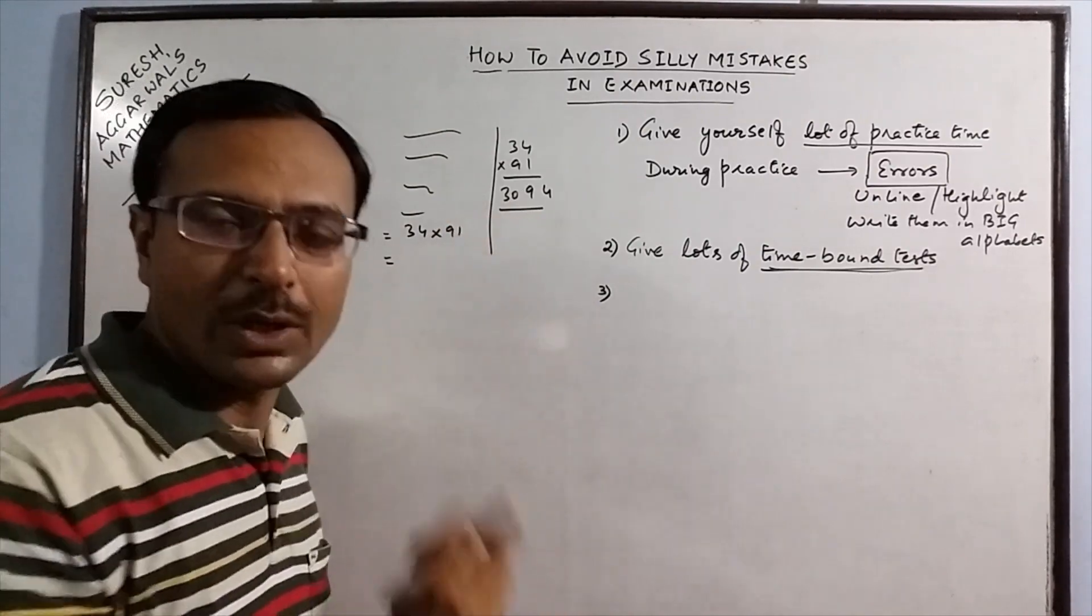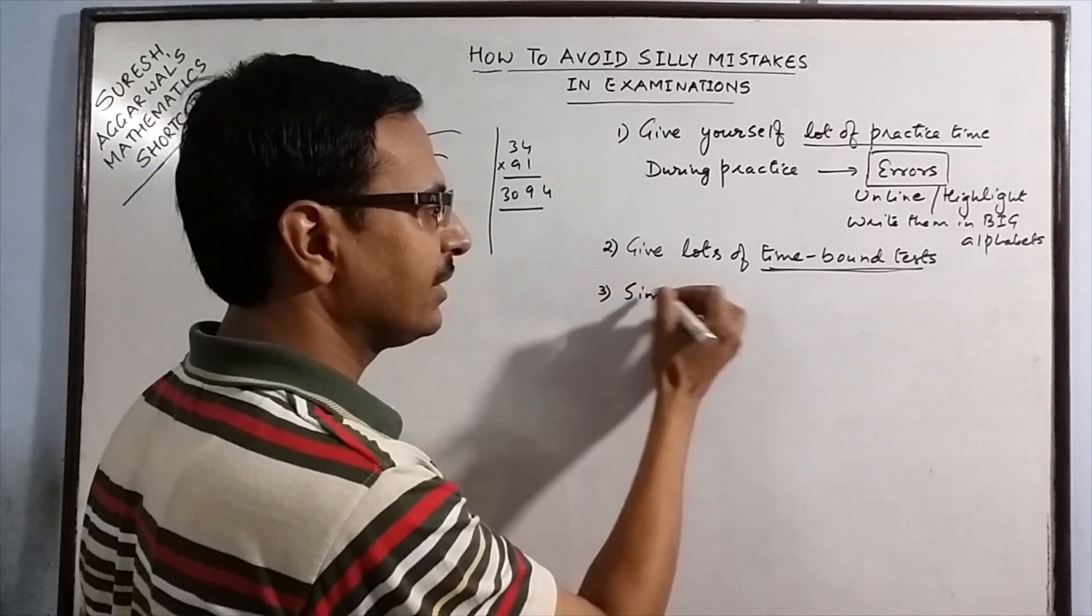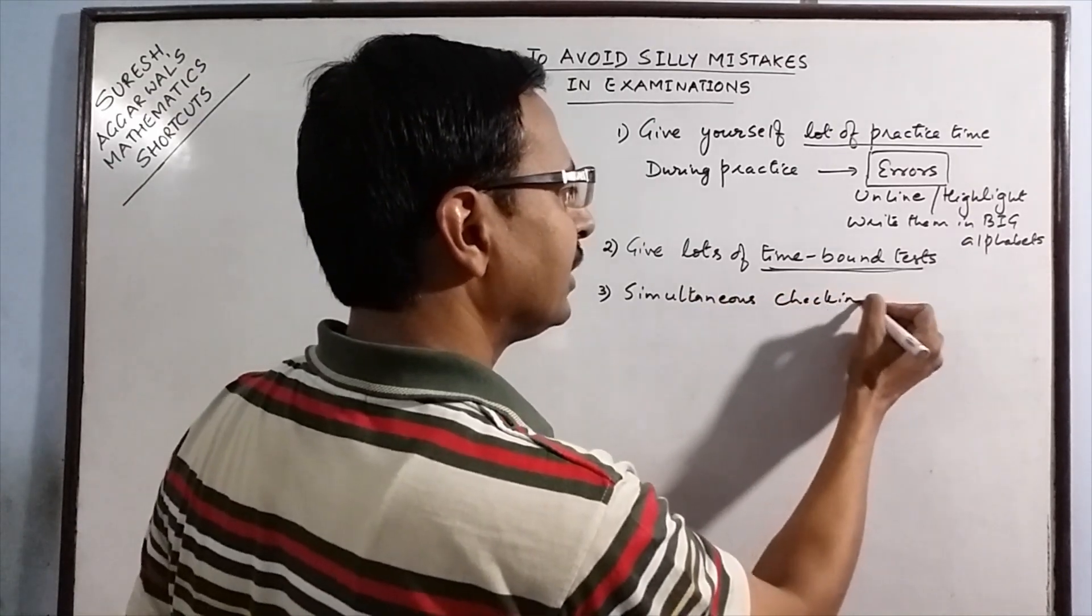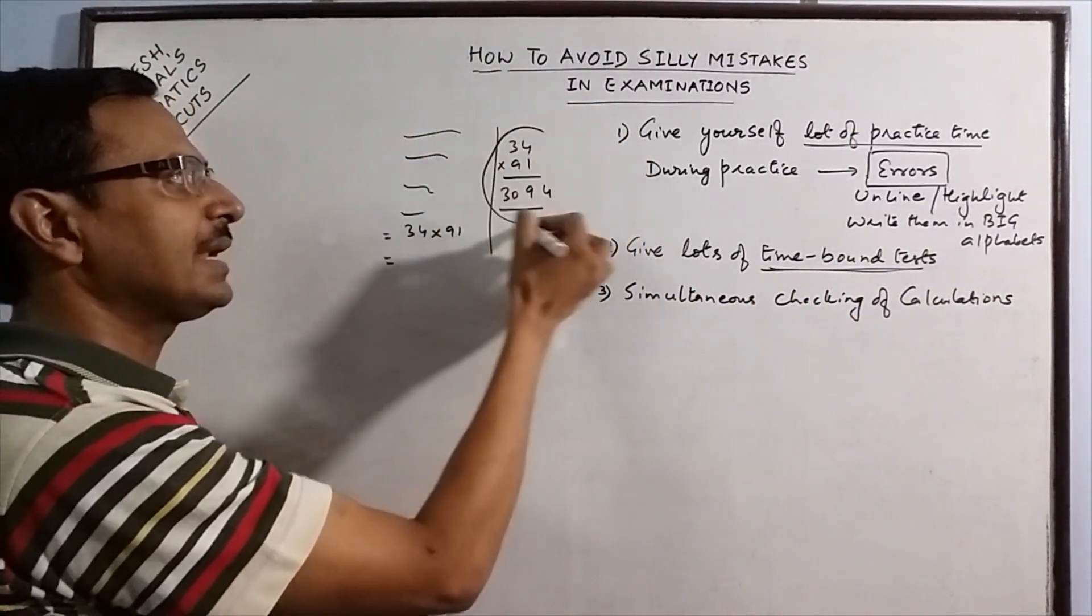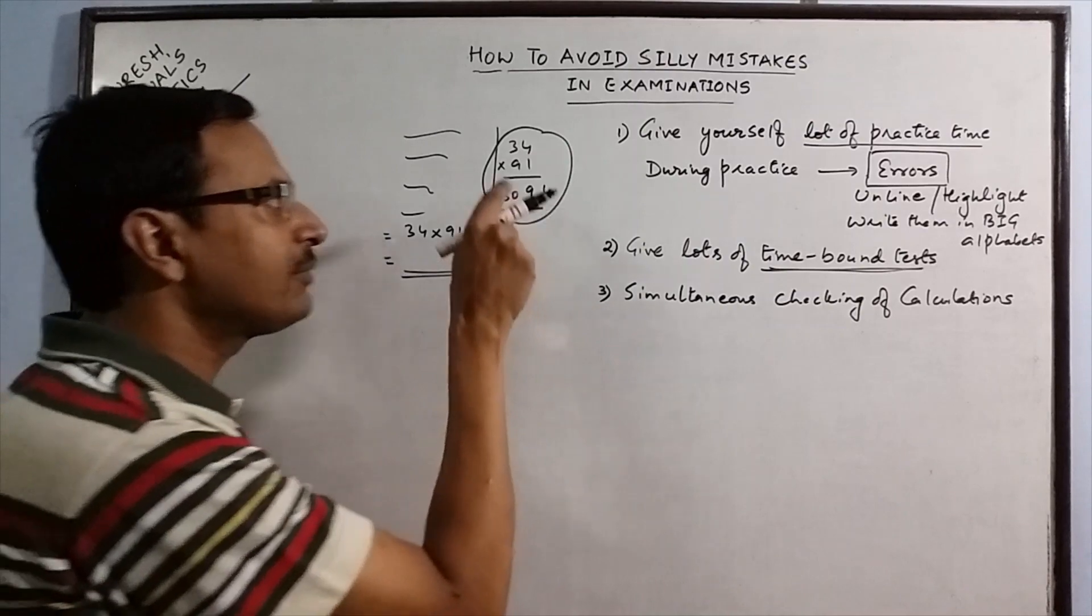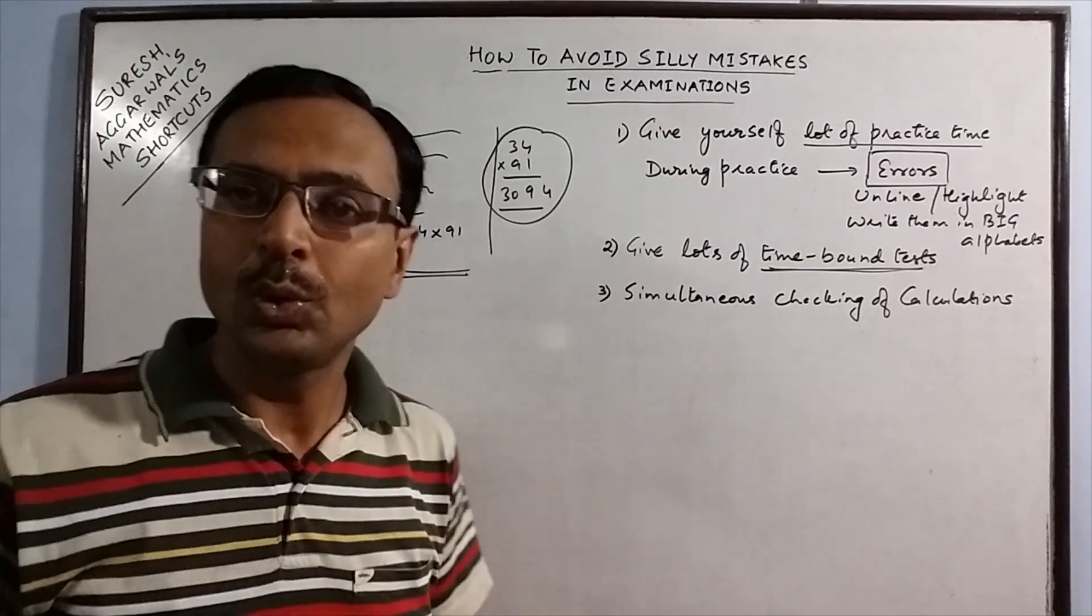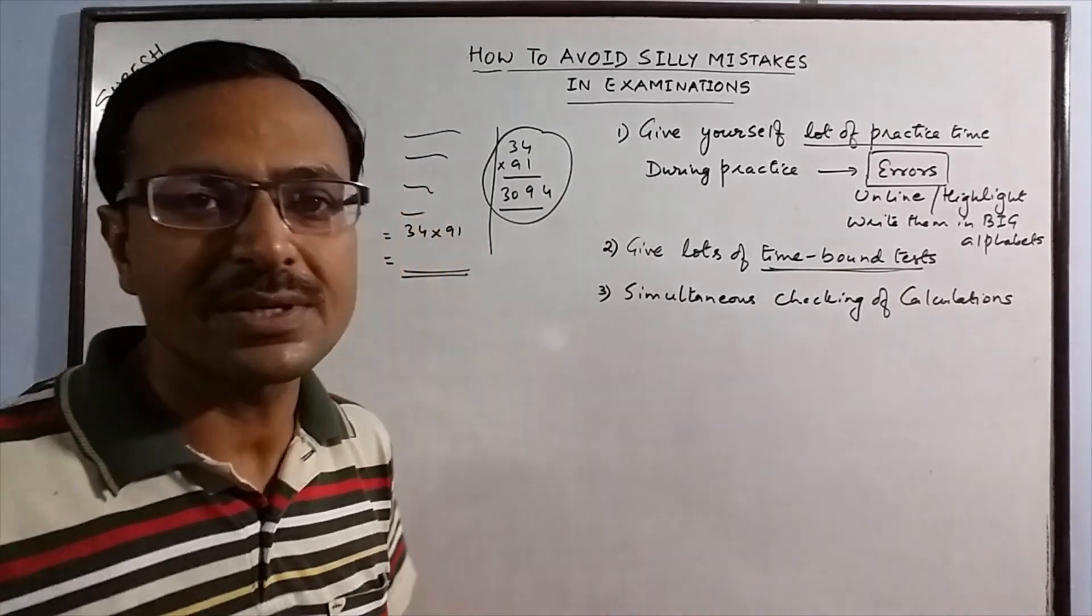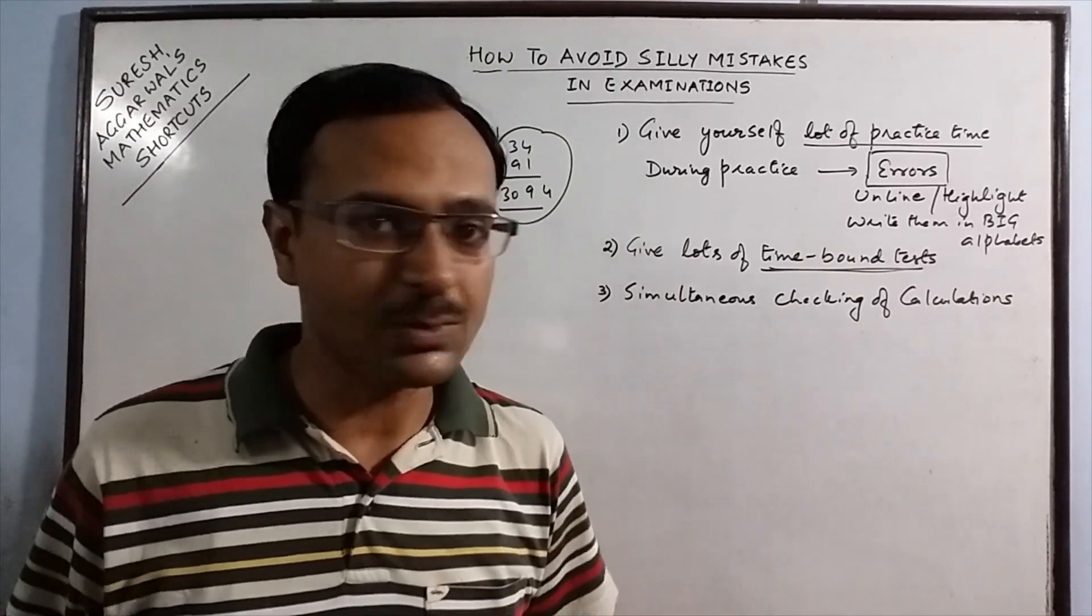This checking of calculations have to be done simultaneously along with the attempt. That is simultaneous checking of calculations. When you do calculations, whenever you do a calculation in the rough work, before writing the answer in the fair part, you have to check it then and there second time. So all calculations which you do have to be checked then and there simultaneously along with the attempt. You cannot check all calculations in the last 5 to 10 minutes of the paper. Simultaneous checking of calculations is very important.